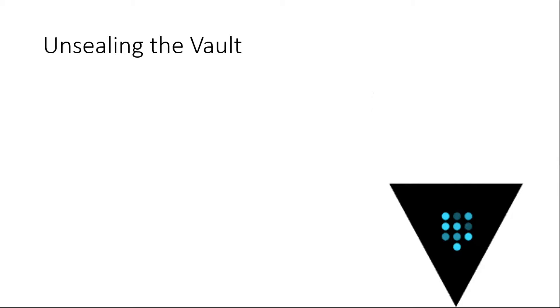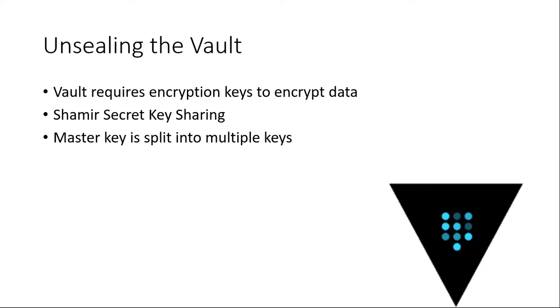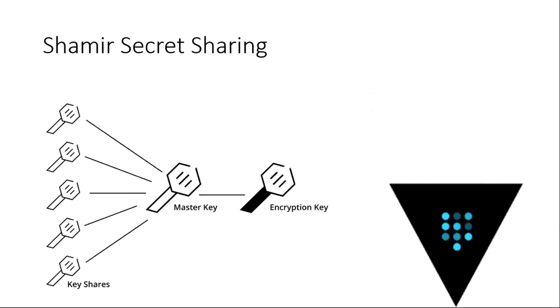When you start up Vault, they have something called unsealing. When you start it up there are no keys — they have a ceremony called unsealing. Vault requires an encryption key to encrypt data. What Vault uses is called Shamir's Secret Sharing — it basically splits the master key into multiple parts. It creates a bunch of keys and then you pick, say, three out of five, and use those three keys to unseal. It would then create a master key and store it in Vault's database for encryption.